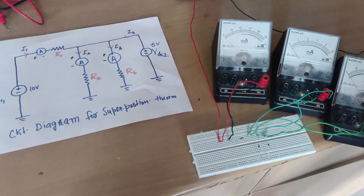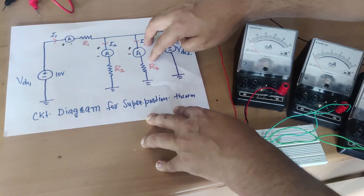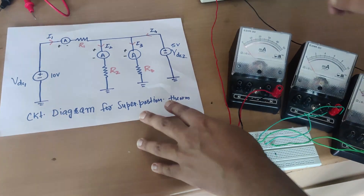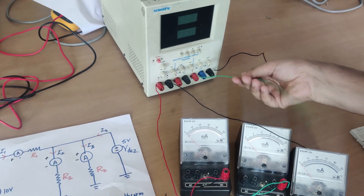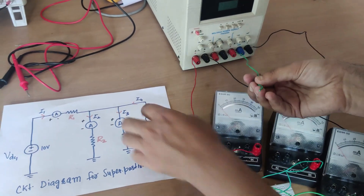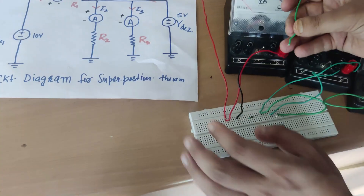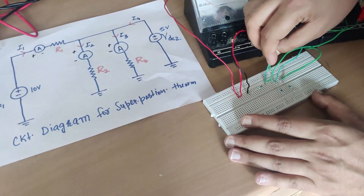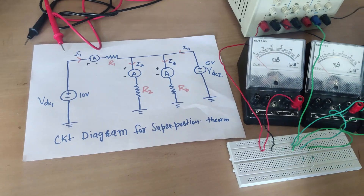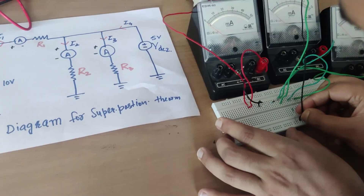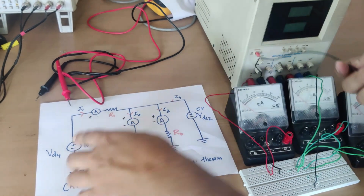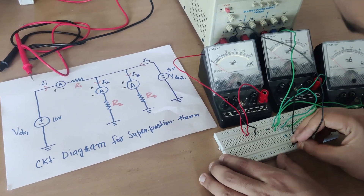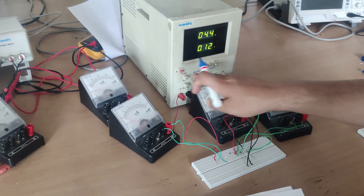Now I connect the second voltage source of 5 volts. Its positive is connected at the same potential node as the other positive terminals. The positive of the 5-volt source is connected here on the breadboard. The negative of this voltage source goes to ground, which is the common ground. The circuit is now complete and I will switch on the DC supply.